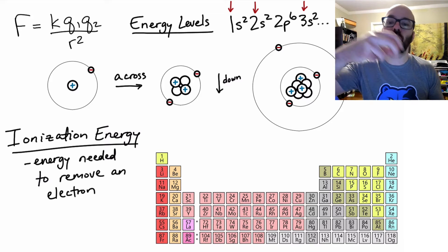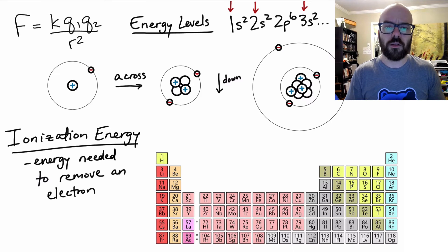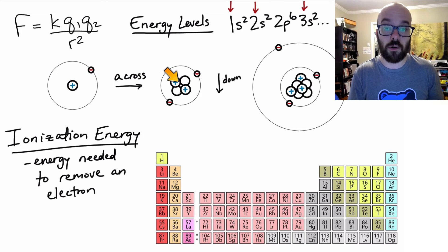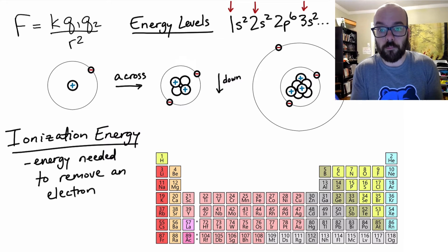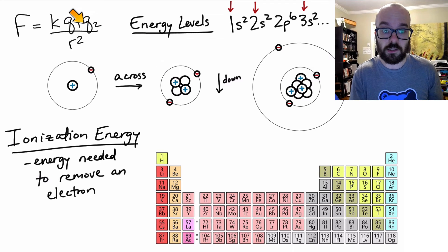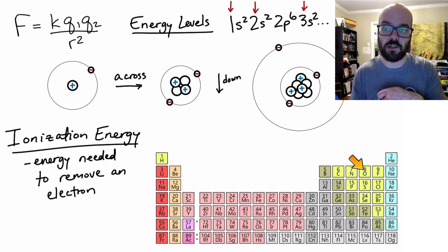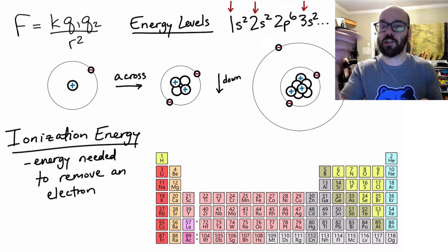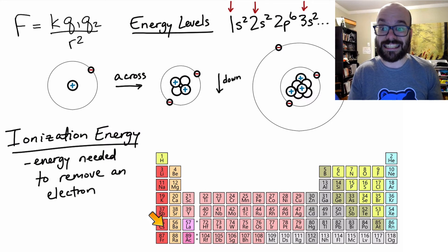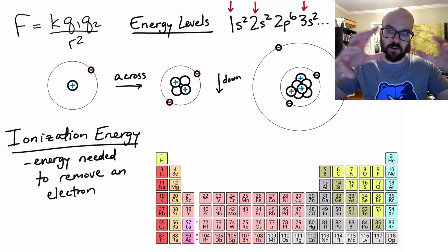Our next trend is ionization energy — the energy needed to remove an electron. Comparing hydrogen to helium: helium has two protons pulling on the electrons, so it would be harder to remove one of those electrons. That goes back to Coulomb's law — greater effective nuclear charge, therefore it takes more energy to remove that electron. So as you go across, ionization energy increases. As you go down, ionization energy decreases — the electrons move farther away, the attractive force from the nucleus is less, and therefore it takes less energy to remove them. Francium, for example, is very reactive because its electrons are so far from the nucleus.